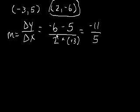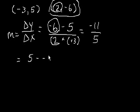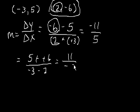And notice that if on the numerator we use negative 6 as a starting point, then in the denominator we have to use 2 as a starting point. We could have done it the other way around. We could have said 5 minus negative 6 over negative 3 minus 2, in which case we would have gotten 11 over negative 5. So as long as you, if you use the negative 6 first, then you have to use the 2 first. Or if you use the 5 first, then you have to use the negative 3 first.